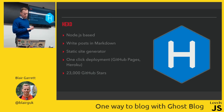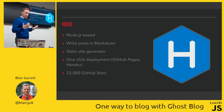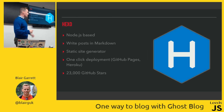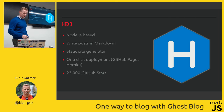There's also a more blog-specific Node.js-based option called Hexo. You write your posts in Markdown — it's another static site generator, and you can do one-click deployments to GitHub Pages, Heroku, etc. It has 23,000 stars on GitHub, making it another very popular platform.